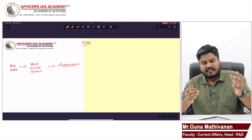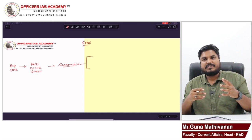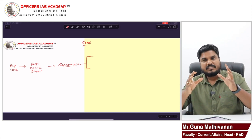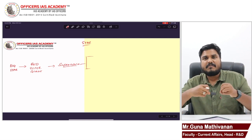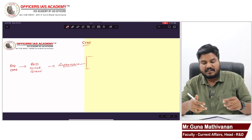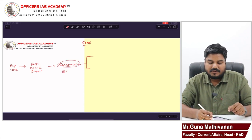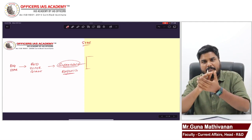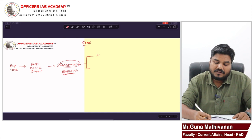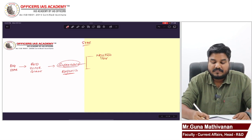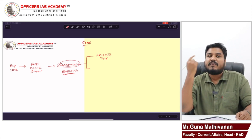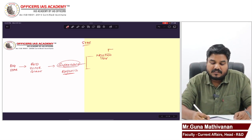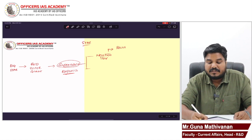After this supernova explosion, the remains of the star will compress — just like the remains of an exploded building. These compressed remains form a neutron star. That neutron star keeps spinning in space, and that spin is called a pulsar.